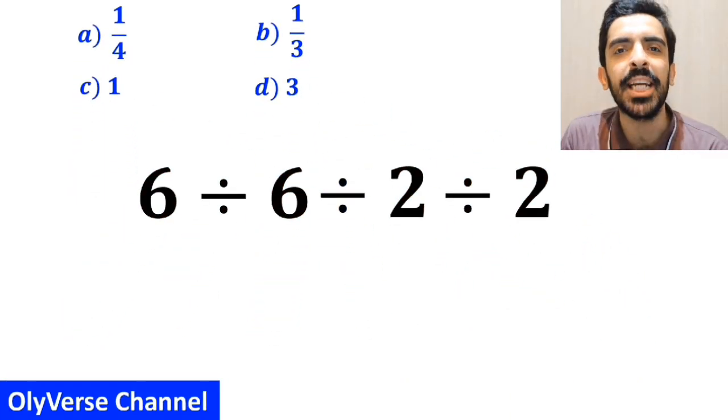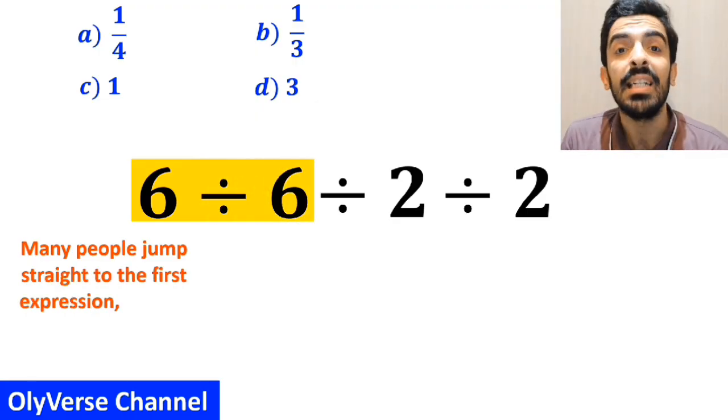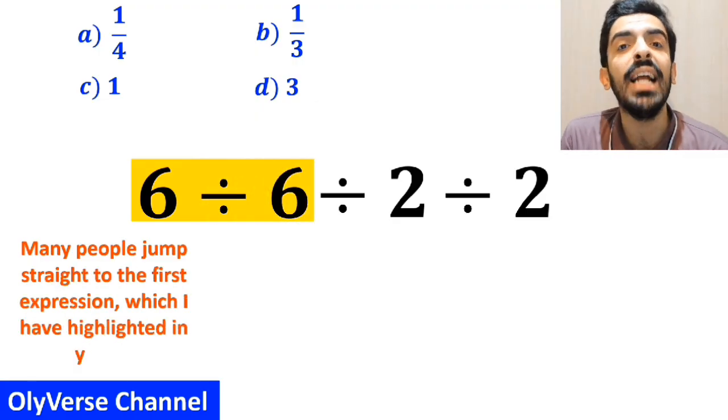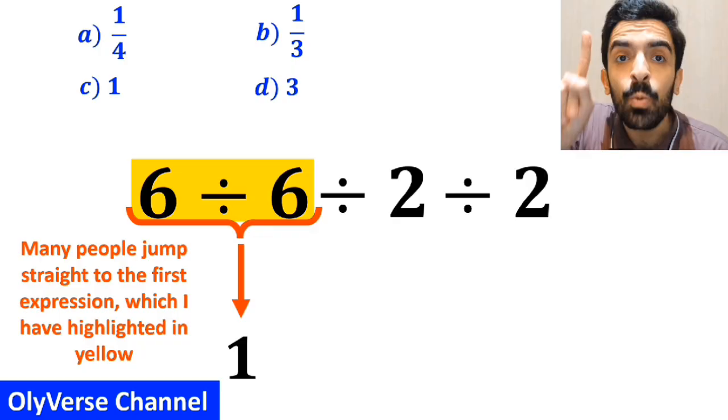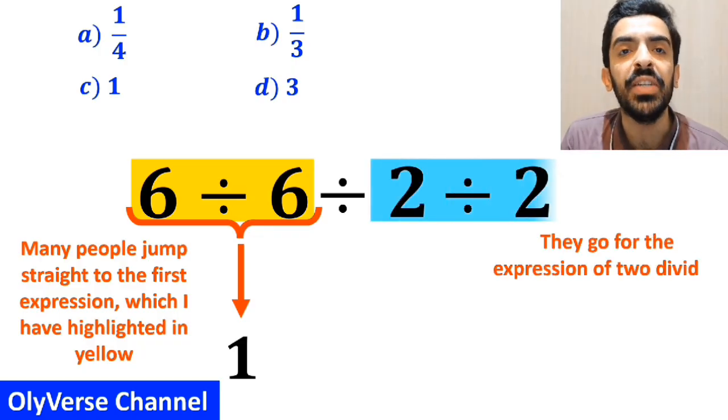Let's carefully go through this step by step together. At the beginning of solving this question, many people jump straight to the first expression, 6 divided by 6, which I have highlighted in yellow, and replace it with 1. In the next step, they go for the other expression of 2 divided by 2.